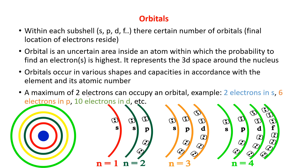As an example: the maximum number of electrons in s is 2, because s contains only one orbital accommodating two electrons. In p, it is 6 electrons — because p has three orbitals and each holds two electrons, so 2×3=6. In d, it is 10 electrons — because d has five orbitals, so 2×5=10. In this way you can count the number of orbitals and number of electrons in each and every subshell.